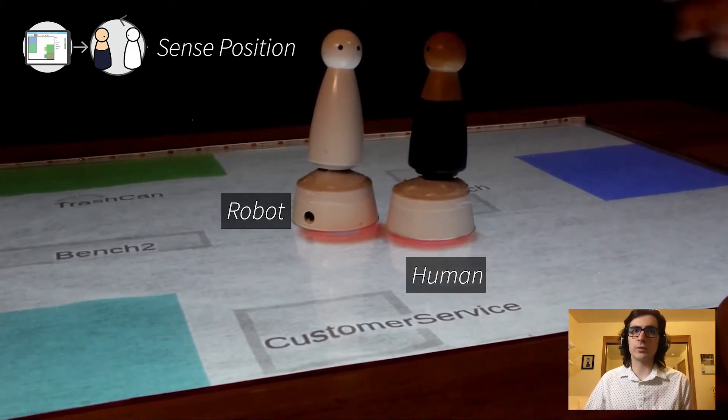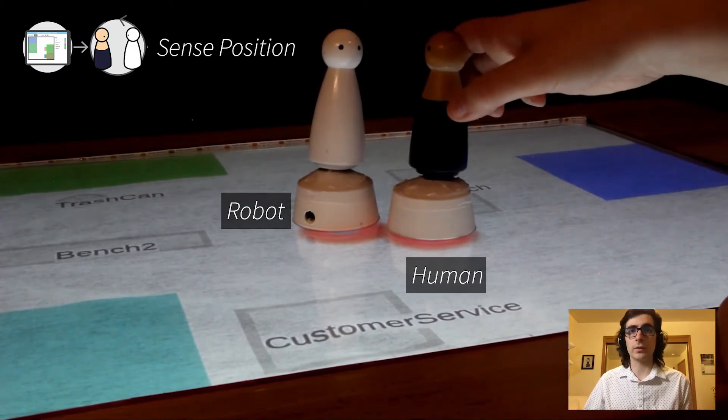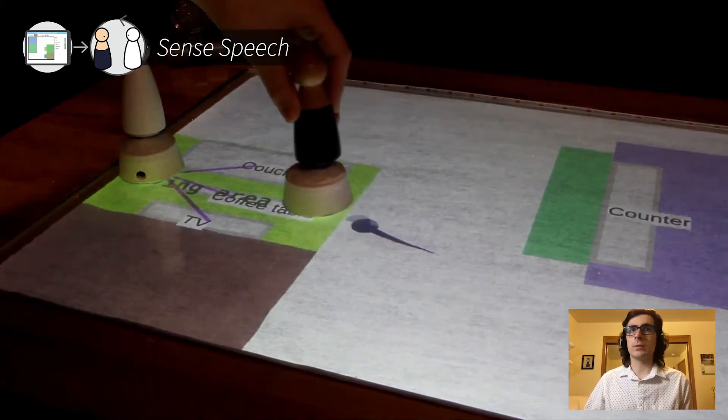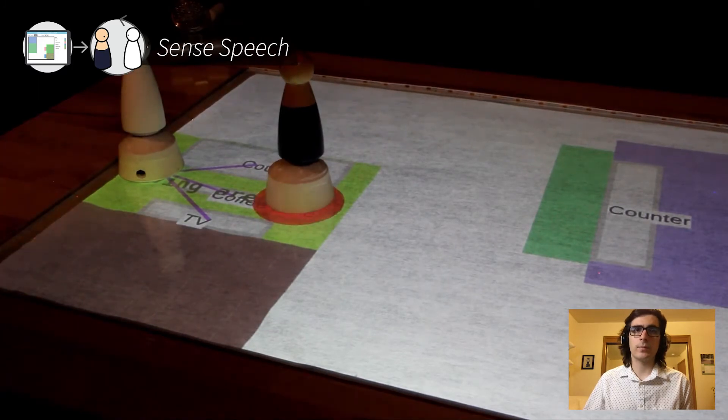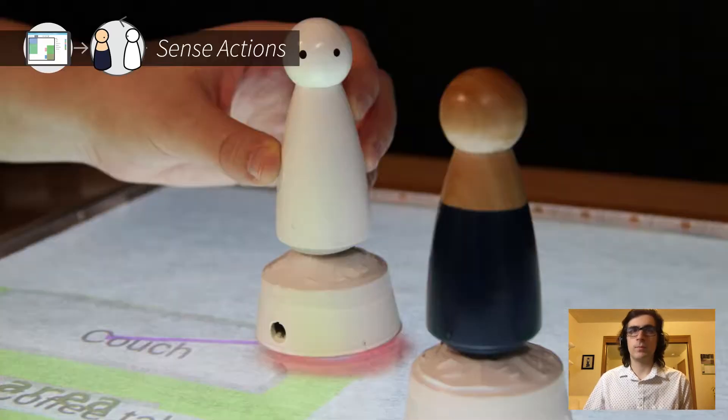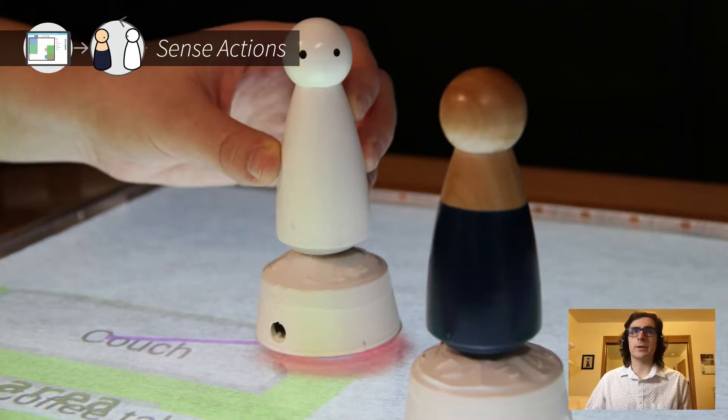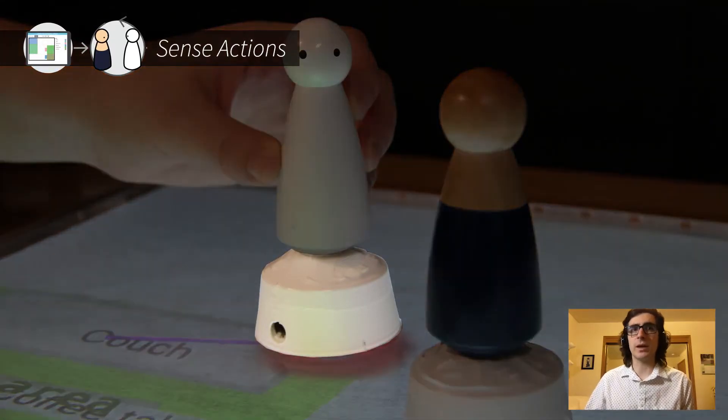The tabletop will sense various actions performed by the demonstrators as they manipulate the figurines. For instance, the tabletop tracks the position of both figures. Figaro also records demonstrators' speech. Furthermore, the robot figurine is instrumented with a joystick base, meaning that Figaro can record actions performed on the robot figurine itself.